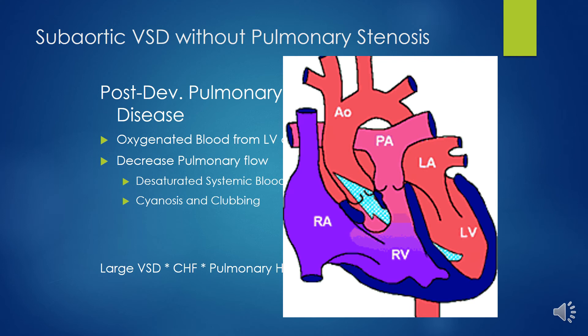For DORV with subaortic or doubly committed VSD with pulmonary stenosis, the treatment is similar to tetralogy of Fallot. However, the VSD is closed by creating a tunnel rather than a straight patch. Infundibulotomy is generally recommended because subpulmonary stenosis is almost always present. Since the pulmonary circulation is protected by the stenosis, repair may be delayed up to 2 years of age depending on the degree of symptoms.